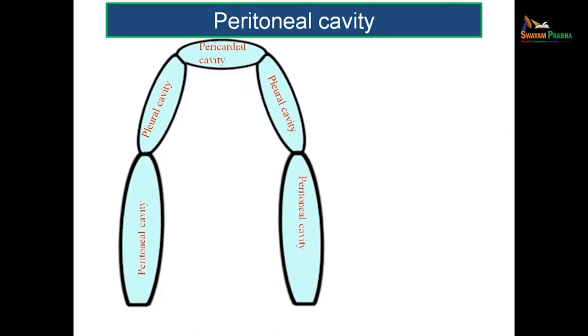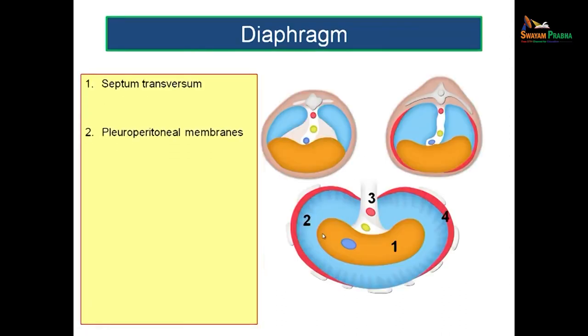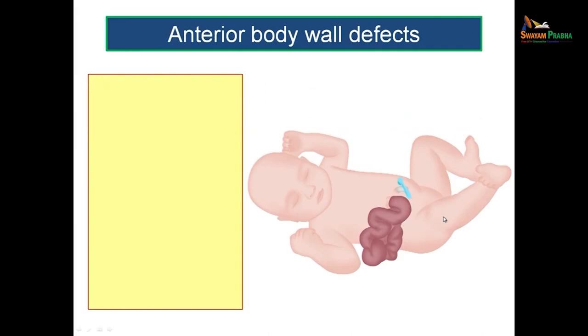The peritoneal cavity: initially two separate cavities, after folding they fuse to form a single peritoneal cavity. The diaphragm is derived from many sources: first, the septum transversum — said to be the chief source; then the pleuroperitoneal membranes; then the dorsal esophageal mesentery, otherwise known as the mesoesophagus; and towards the periphery, the body wall. All these structures give rise to the formation of the diaphragm.